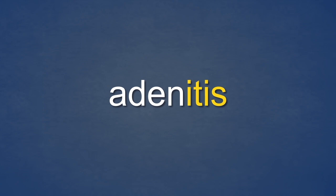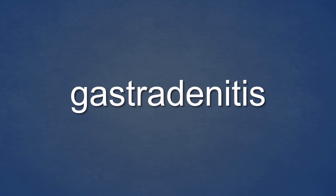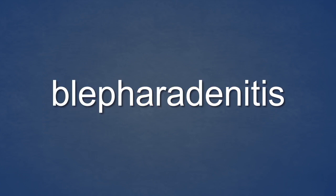Blefaritis, right to left: inflammation of the eyelid. Even more complex medical terms are easy to understand when you know the meaning of its elements. Look at this medical term — gastroadenitis. Just interpret it from right to left using the elements you have already learned. Gastroadenitis: inflammation of the glands of the stomach. Blefaradenitis: inflammation of the glands of the eyelid.